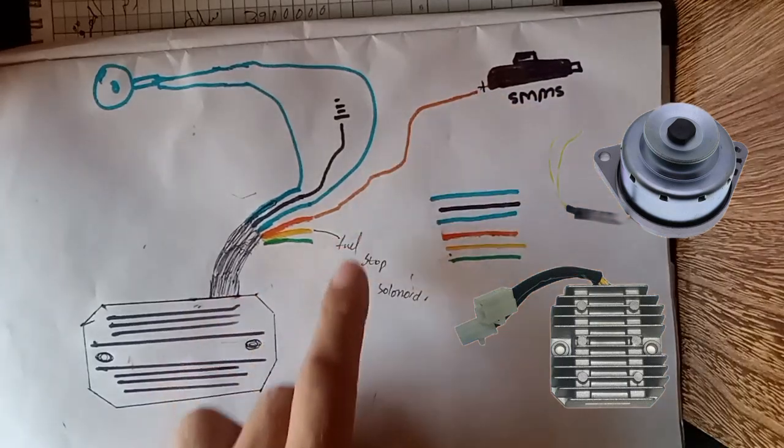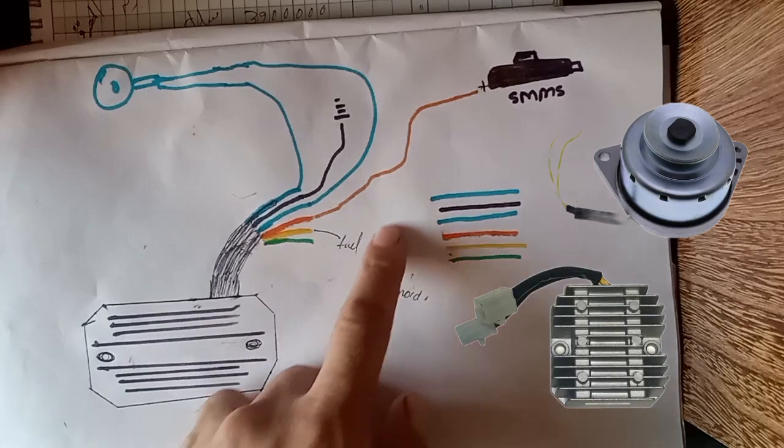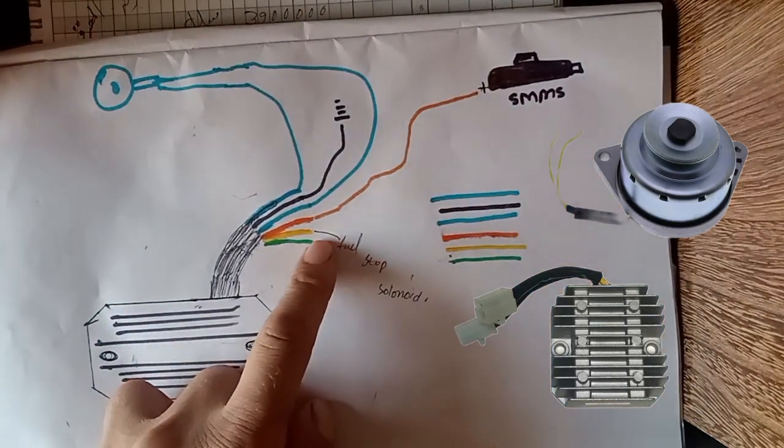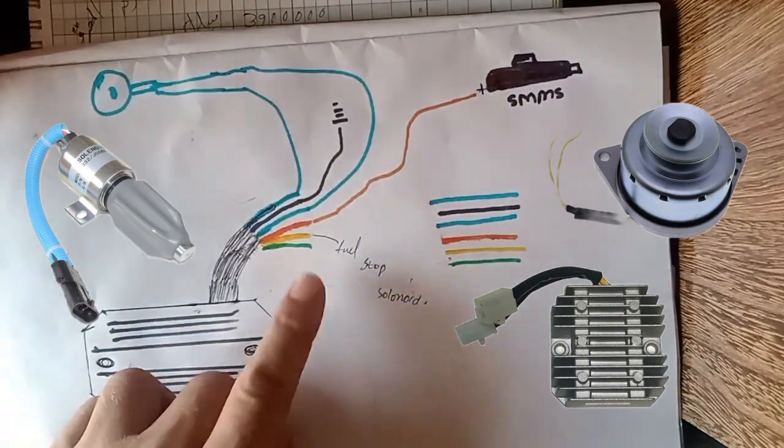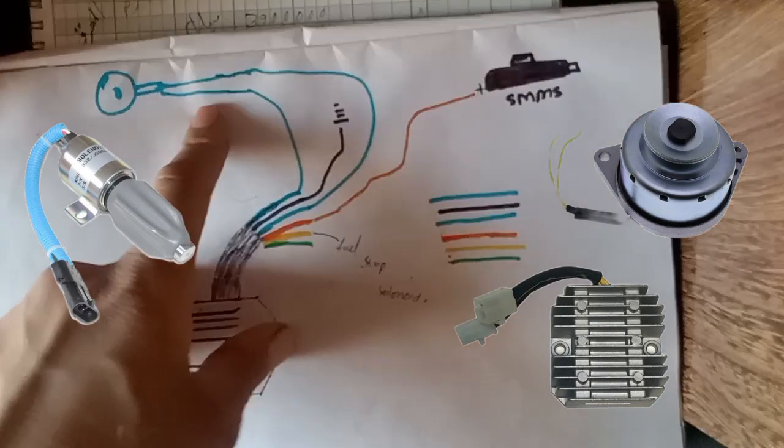The yellow wire goes to the fuel shut-off solenoid. If you want to control your fuel shut-off solenoid from the charging rectifier, this is the positive output connection.